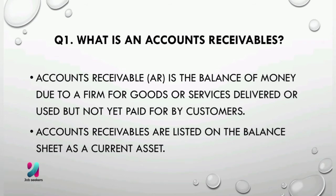The first question is: what is accounts receivable? Account receivable is the balance of money due to a firm for goods or services delivered or used but not yet paid by the customers. Account receivables are listed on the balance sheet as a current asset, and are created when a company lets a buyer purchase their goods or services on credit. The strength of a company's AR can be analyzed with the accounts receivable turnover ratio or days sales outstanding.